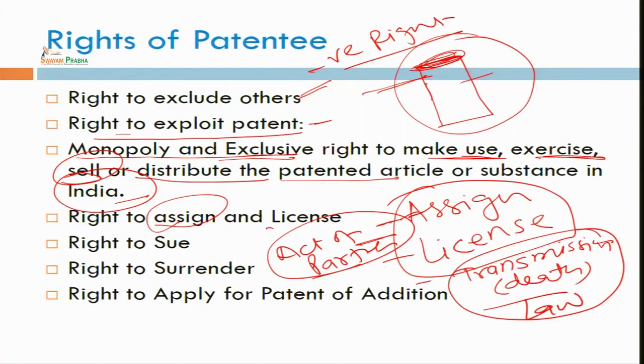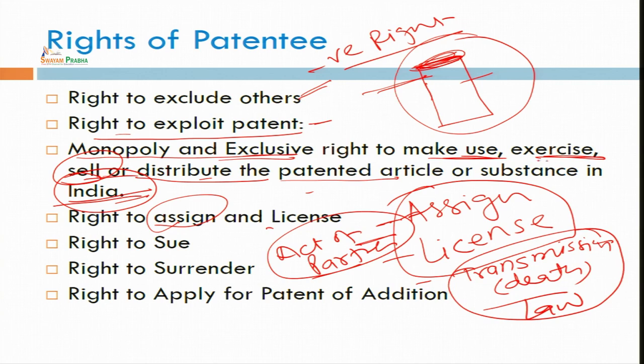The word 'India' is there because these rights are territorial in nature. If you have registered your patent in India, you have the right to sale and right to use in India. But if you want to use these patent rights in different parts of the world, you have to go for registration in those other countries also. That is why you can distribute, sell, or exercise these rights within India. So many people try to use your invention for their benefit. There are many cases — TVS and Bajaj, Apple and Samsung — where these companies fought each other over using patents and sued each other.